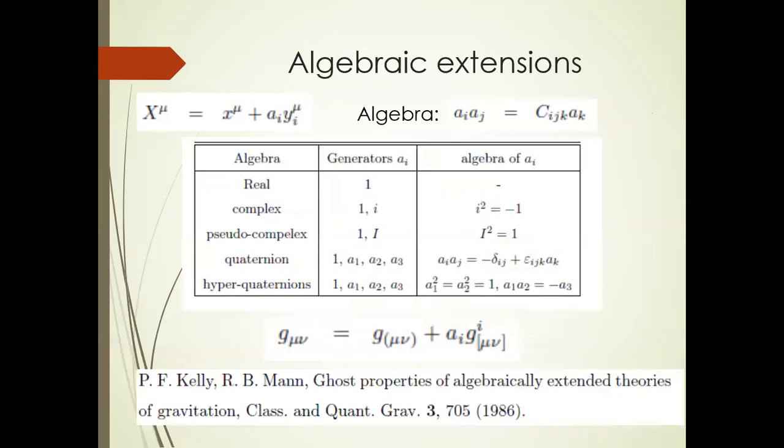Now I come to algebraic extension. They were discussed by Kelly and Mann in '86. You define new coordinates, which is X mu, the old one, and then a linear combination of A i, Y i mu. Really, one of the A i's is in front of X mu. I wrote it only in this form to make this difference. The A i's form an algebra. Therefore, it's called an algebraic extension. The product of A i, Y j gives you a linear combination where you sum over K. Now they discussed several, quite a general list of algebraic extensions. The real one, this would be the general relativity. The complex one, the pseudocomplex one, where I will come back to, quaternion, hyperquaternions. So you can get a matrix, which is symmetric and anti-symmetric.